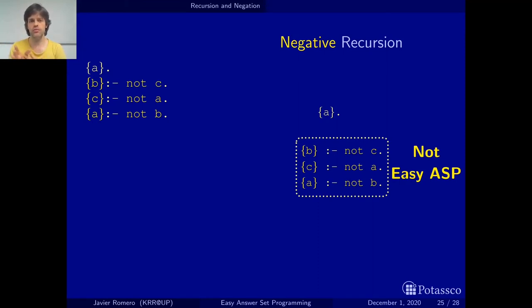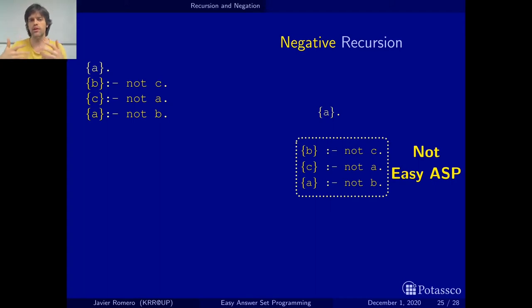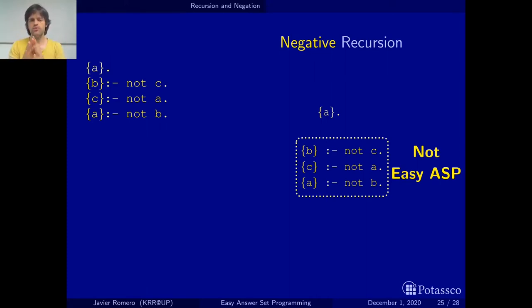You can have a look at the introduction of our course on answer set solving in practice to see how this works. But what is important for us is that if you have a problem represented with recursive negation, you can also represent that problem without recursive negation. So those are the two reasons: first, it's not easy to extend our understanding to programs with recursive negation; and second, it's not needed. And this is not part of easy answer set programming.